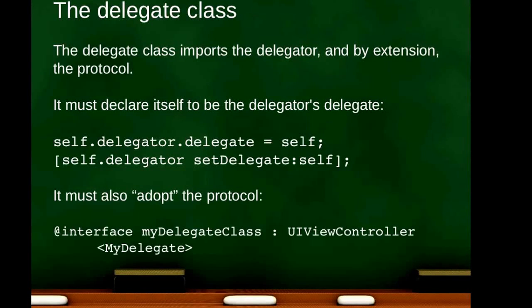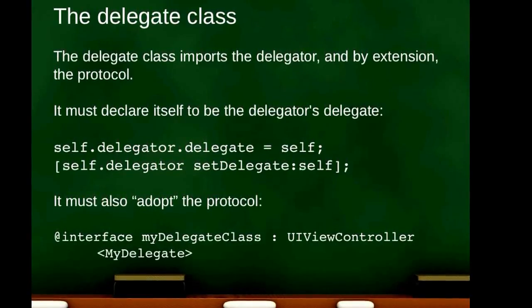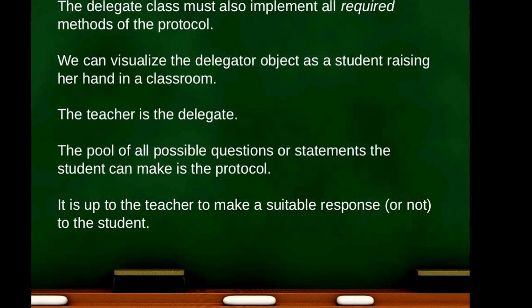You can also send the setDelegate: message with self as the parameter — these are functionally identical. The delegate class also has to adopt the protocol, and it does this using angle bracket notation. So here we have a delegate class called MyDelegateClass that is a UIViewController subclass, and in angle brackets it has adopted MyDelegate. After adopting the protocol, the delegate class must also implement all the required methods of the protocol.